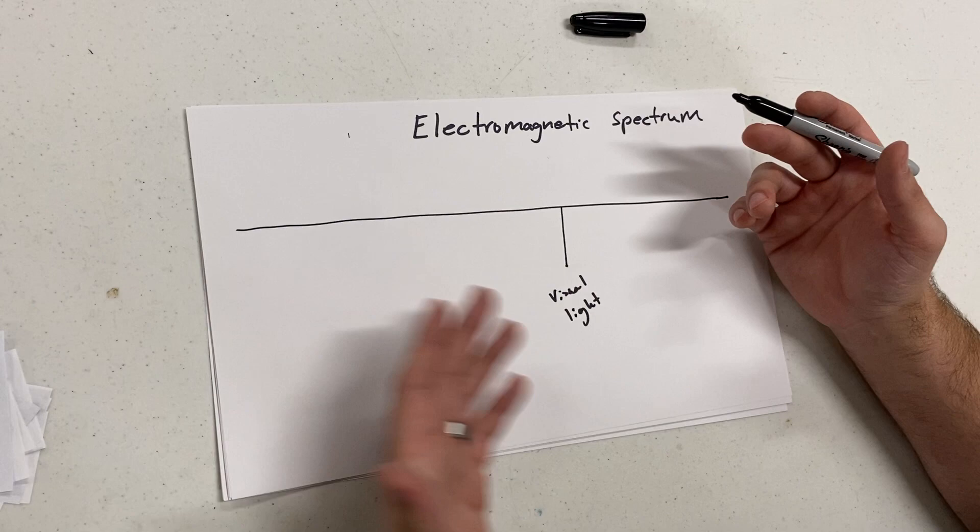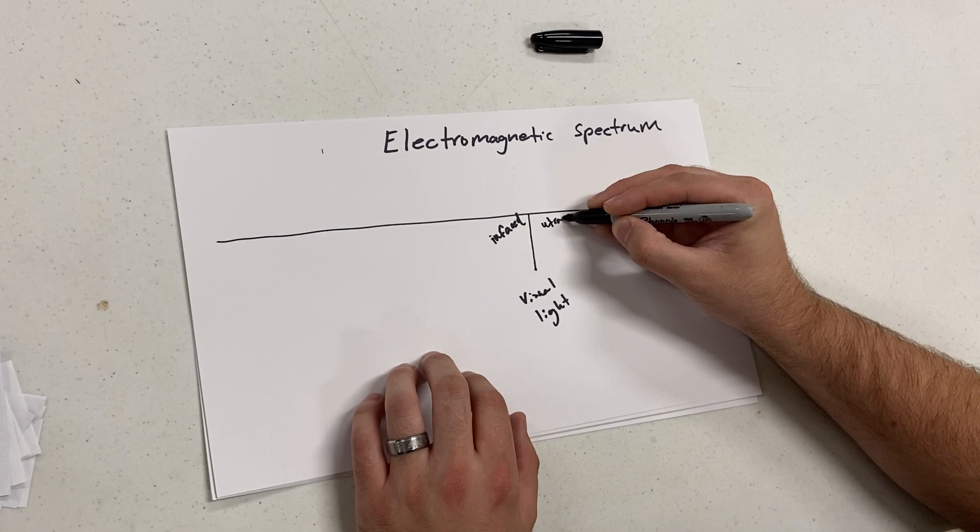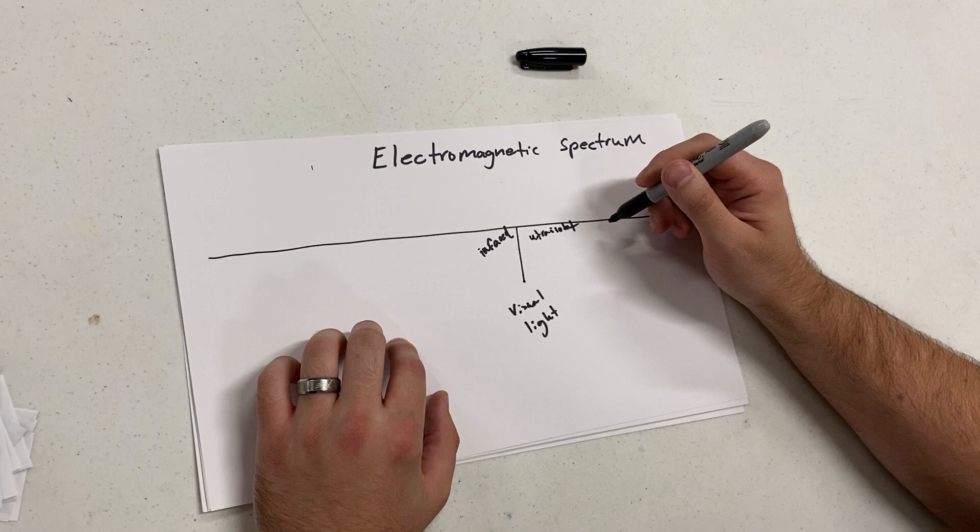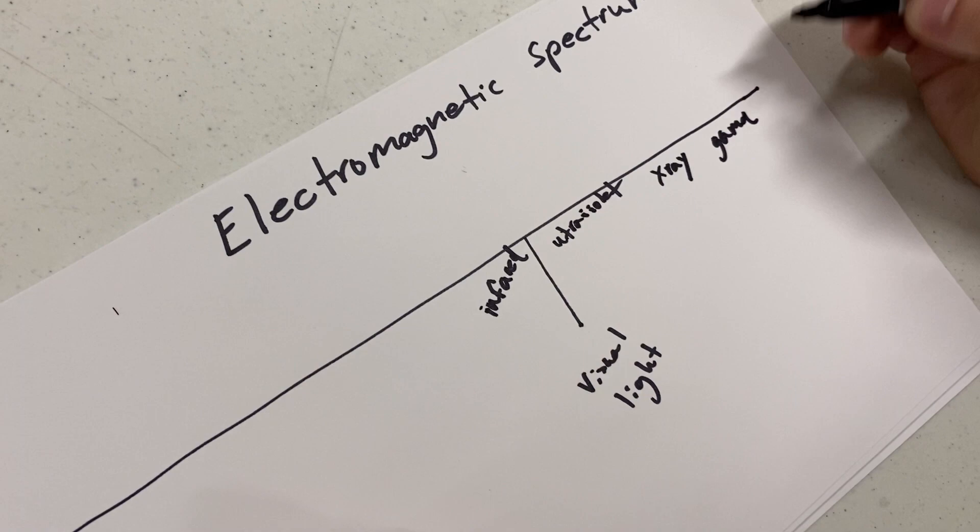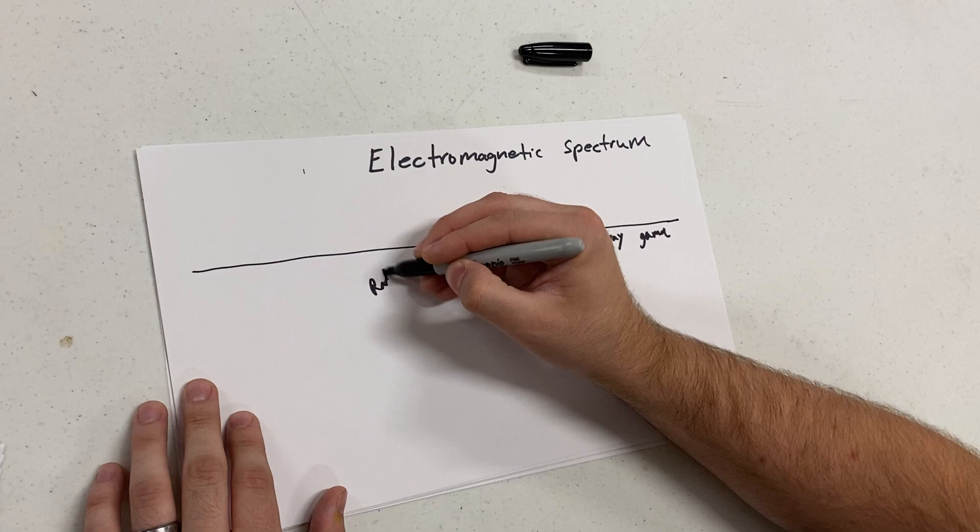There's visual, so that's the stuff we can normally see. We do have other things in here as well. On either side of here, we've got infrared and then we have ultraviolet. On that same side is ultraviolet, next we have x-rays and gamma rays. And then on the other side of infrared, we have microwaves, radar, and radio.